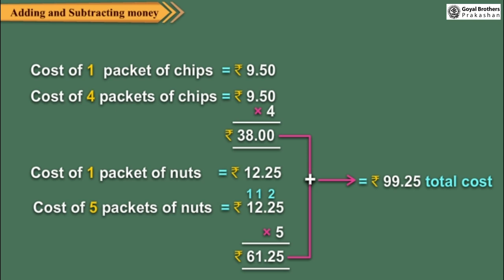So, children, always remember that if you know the price of one item, you can use multiplication to find out the price of several similar items.